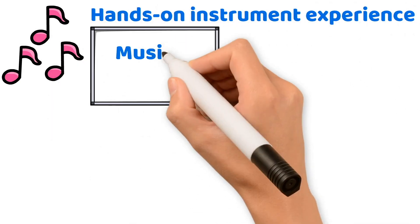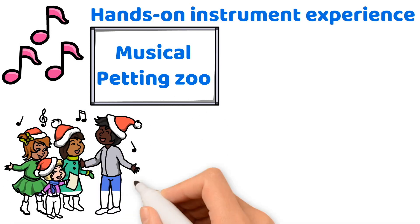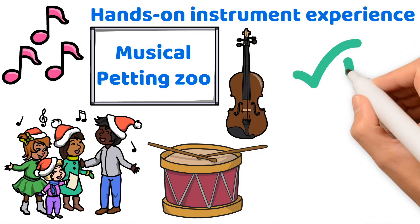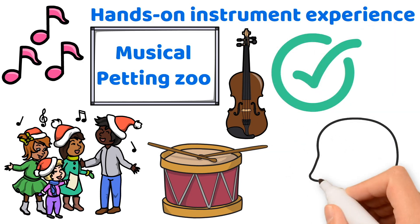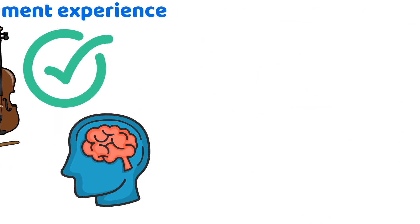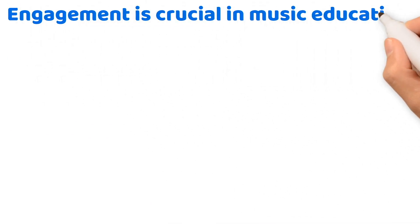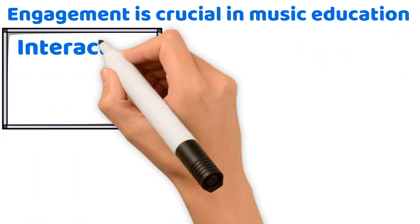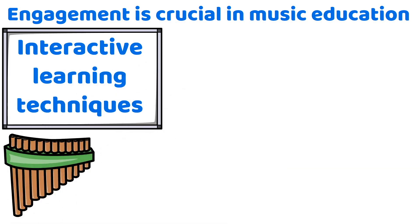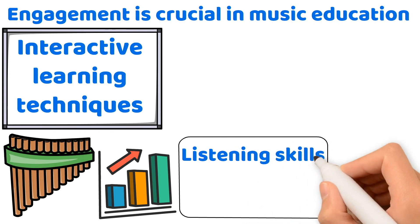Imagine a musical petting zoo where students can touch, play, and hear different instruments, from a hand drum to a violin. This tactile approach not only sparks curiosity, but also deepens students' understanding of how music is produced. Engagement is crucial in music education. Incorporate interactive learning techniques such as musical chairs to teach rhythm, or a name-that-tune game to enhance listening skills and music recognition.